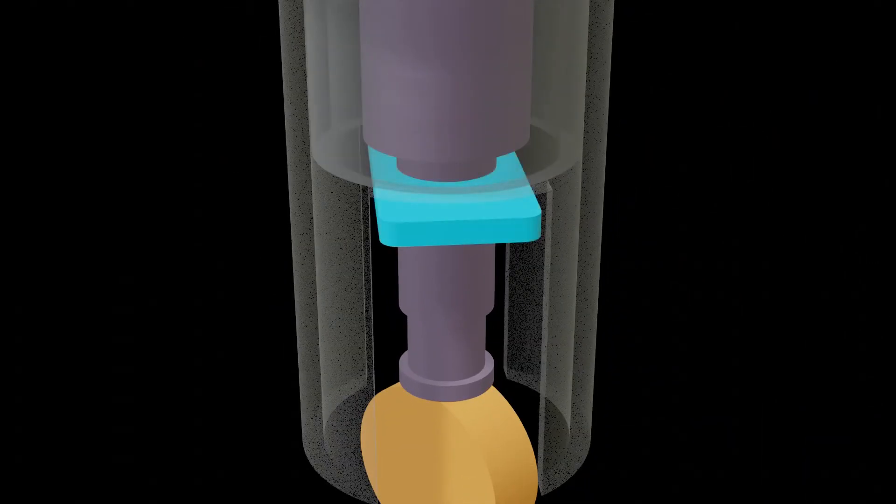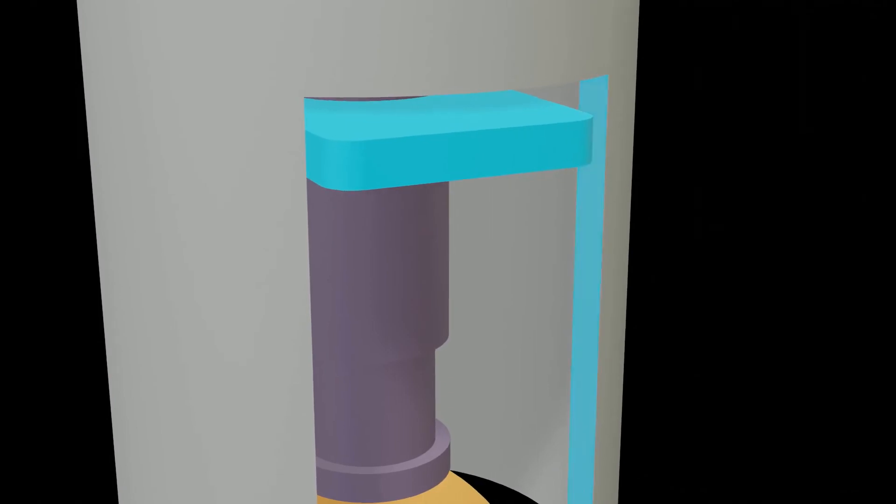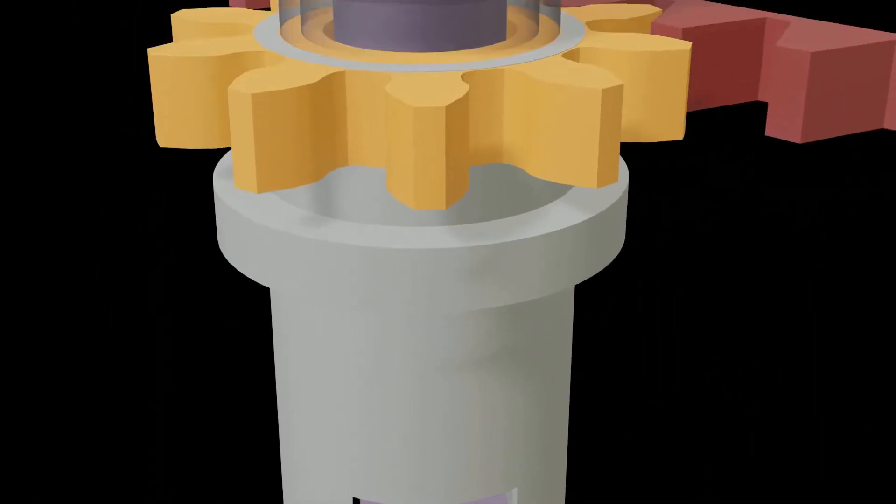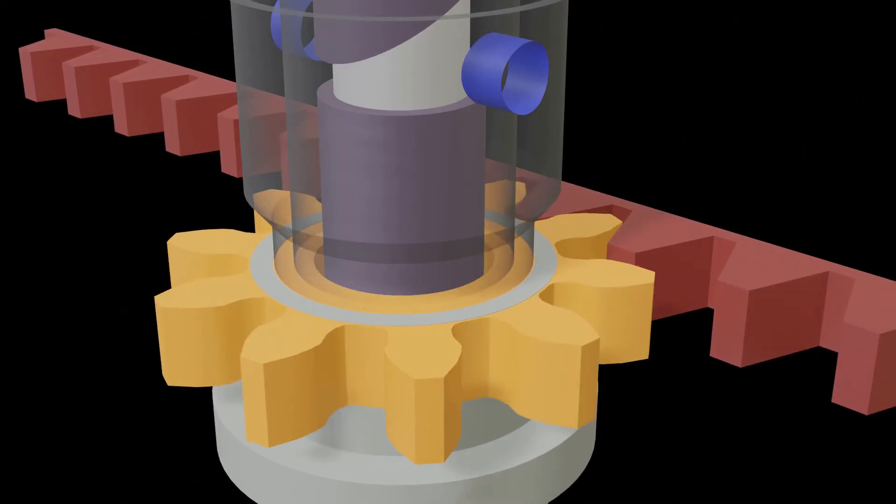Two lugs on the plunger fit into slots in a control sleeve onto which a toothed quadrant engages a rack, also called the control rod. By using this rack, we can control the amount of fuel being pumped.